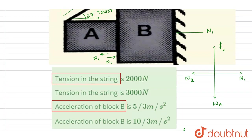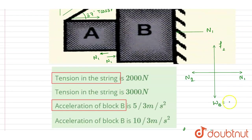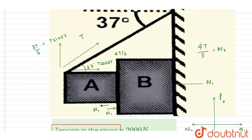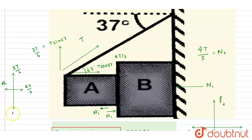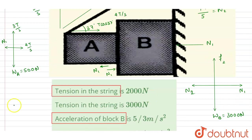The weight of B acts in the downward direction. Mass of B is 300 kg, so its weight is 3000 N. Mass of A is 50 kg, so its weight is 500 N. The tension force component acting upward on A is 3T/5, and the horizontal component is 4T/5. The net horizontal force is zero, giving N1 = 4T/5.